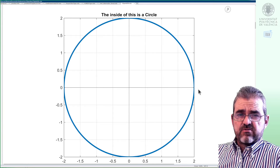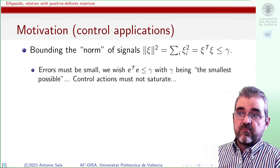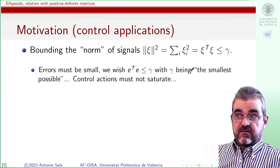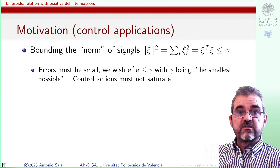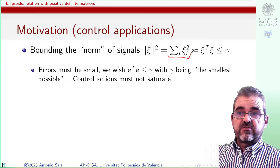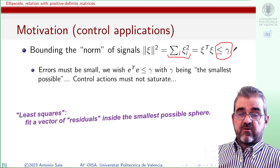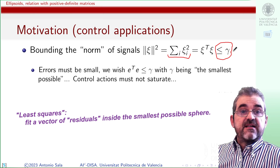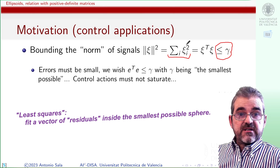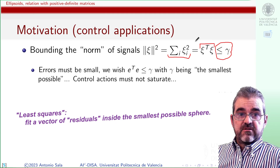This is sort of high school stuff — why am I telling you this? Here is the motivation. In many problems, including control problems, bounding the norm of certain signals or fitting some models by least squares means the sum of squares of something must be below a given bound, or if we are optimizing, the bound gamma must be the smallest possible. That's the idea behind least squares. Least squares and the geometry of circles are closely connected: circles are the level sets of least-squares approximations.